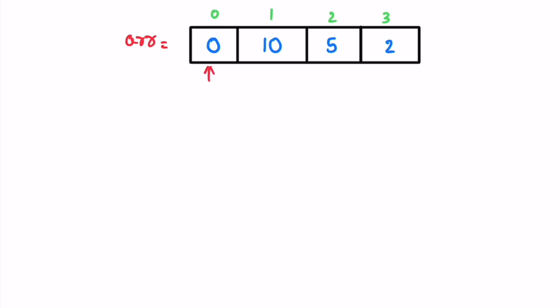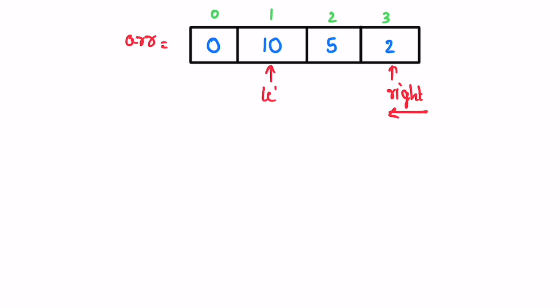We solve this using a two-pointer approach. The left pointer starts at the beginning and the right pointer starts at the end. We use a while loop: if the element at the current left index is strictly less than the element to its right, we increment the left pointer. Since zero is less than ten, we increment left. Then we check again — it is not less, so we end the left pointer iteration.